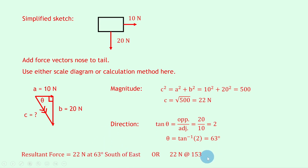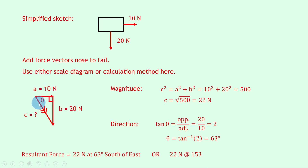For south of east: we've got east that way, and our resultant vector is down towards south, so it's 63 degrees towards south away from east — 63 degrees south of east. For the bearing, we start at 000 (north) and go all the way around. We pass through 90 degrees and then add angle theta to 90 degrees — 90 plus 63 — which gives us a bearing of 153.